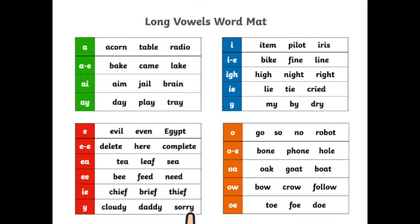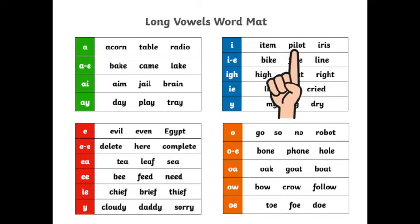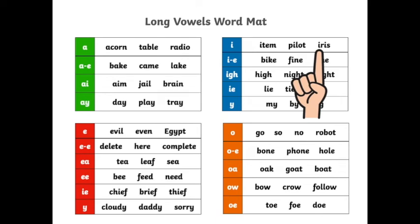Now let's go to the blue table and read some of these words containing the I sound. I-T-E-M: Item. P-I-L: Pilot. I-R-I-S: Iris.